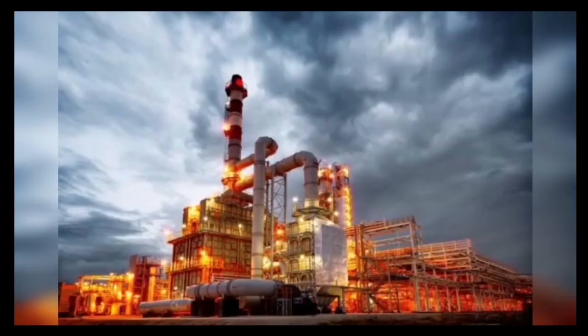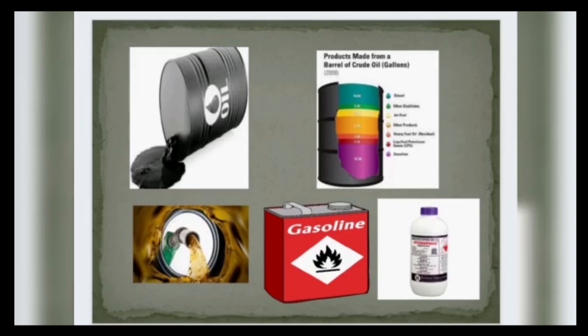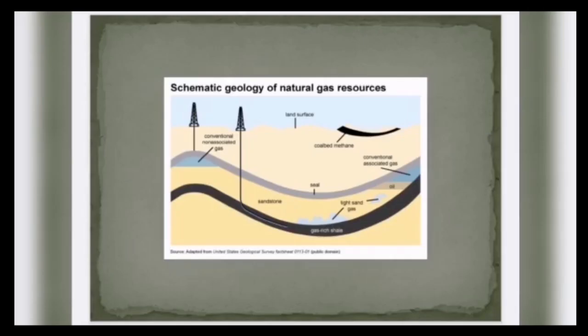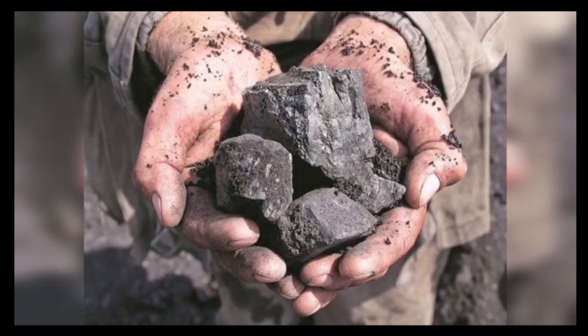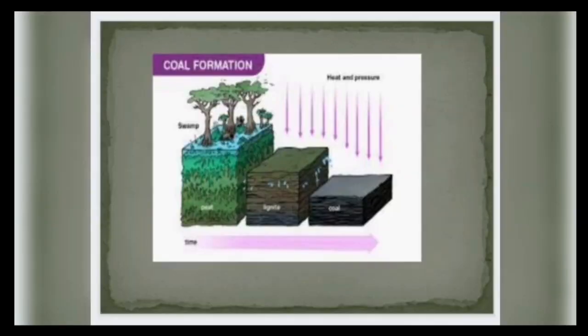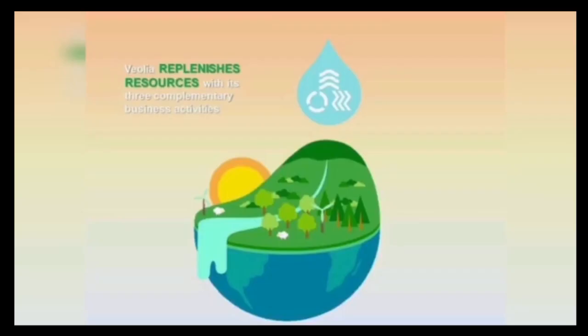Oil is extracted from crude oil and is processed in oil refineries to create fuel, gasoline, petroleum gas and other non-fuel products such as pesticides, fertilizers, pharmaceuticals and plastics. Natural gas is formed by decaying organic matter that has been buried and then subjected to intense heat and pressure. Coal comes from the remains of plants which takes millions of years to form. These resources take thousands or even millions of years to replace, so we need to conserve them.